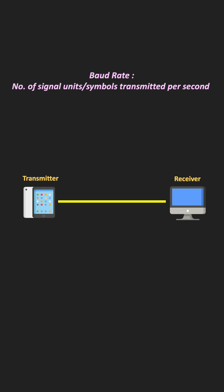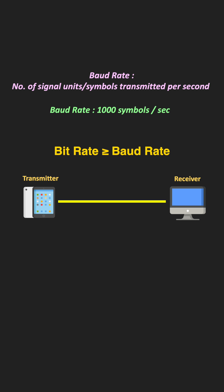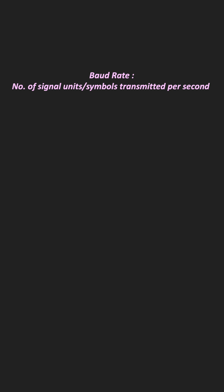So for one communication system, if the baud rate between two devices is equal to 1000, it means that in one second, total 1000 symbols are transmitted. Now for the same communication link, the bit rate is typically more than the baud rate, or at most the same as the baud rate, and that depends on the modulation technique. In general, the bit rate is equal to the baud rate times the number of bits per symbol.